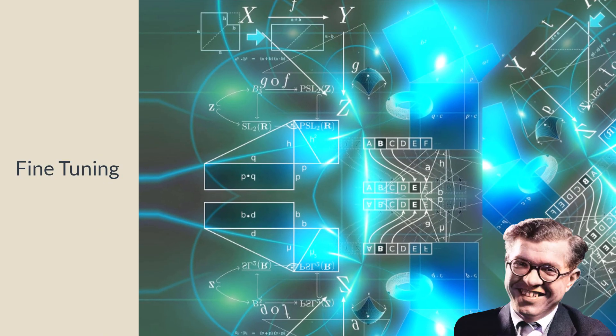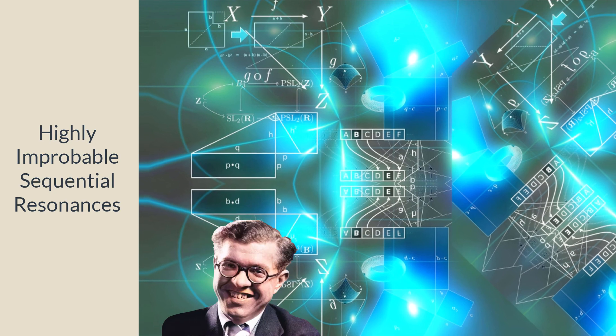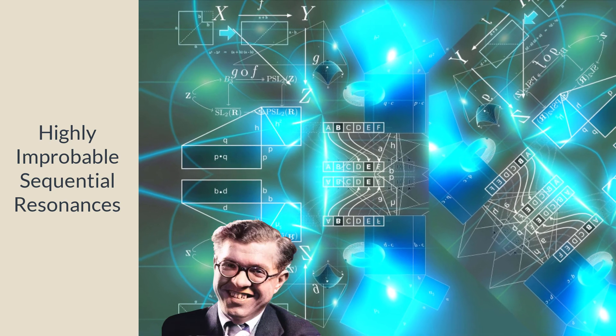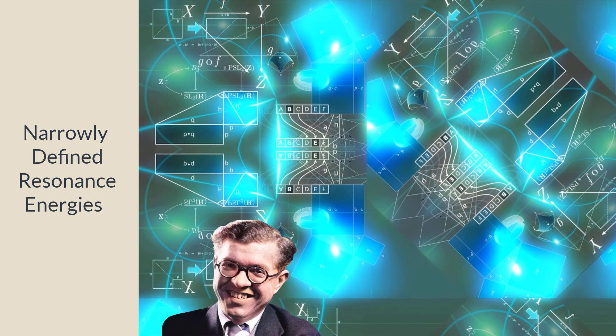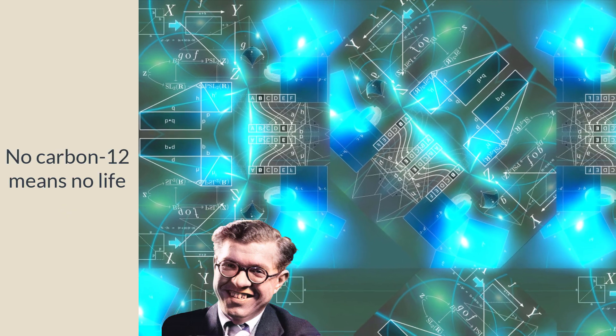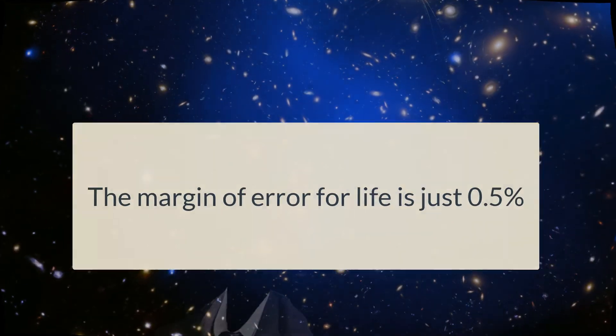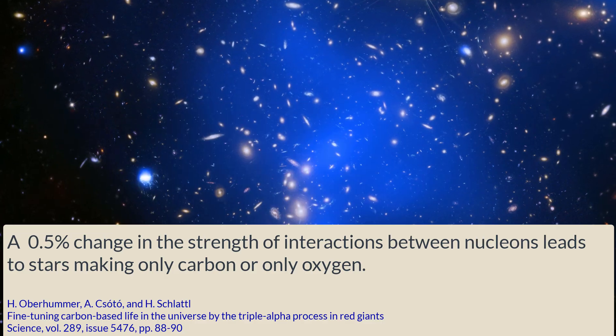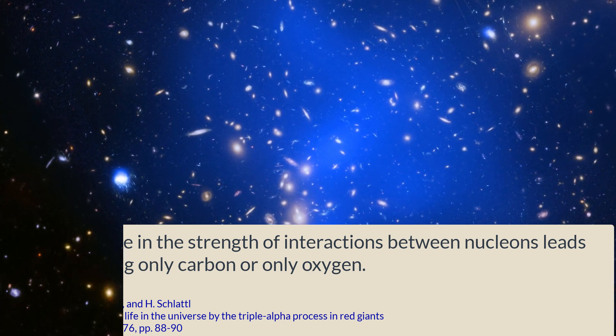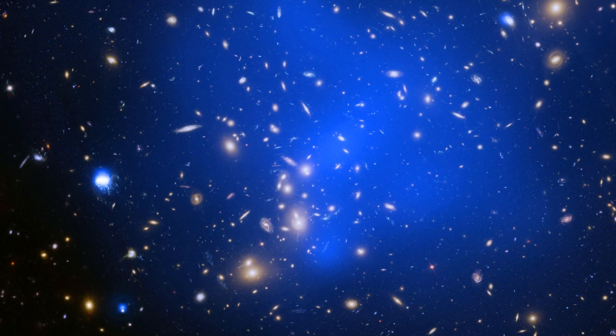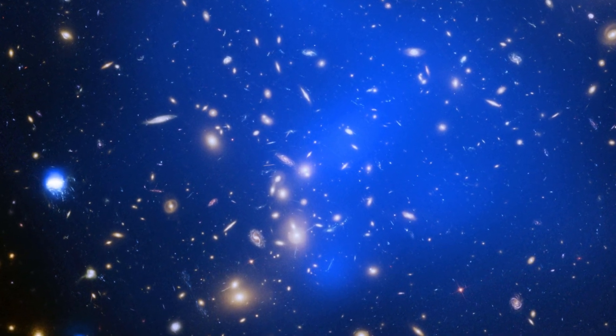Some scientists, including Hoyle, later argued that the triple alpha process has a deeper interpretation. The universe looks to be improbably fine-tuned. The narrow resonance bands without which there would be no beryllium-8 and carbon were evidence of this. They are so delicately arranged that there's little room for variation. Do the delicate patterns imply that the universe had an architect? I'll leave that question to you.